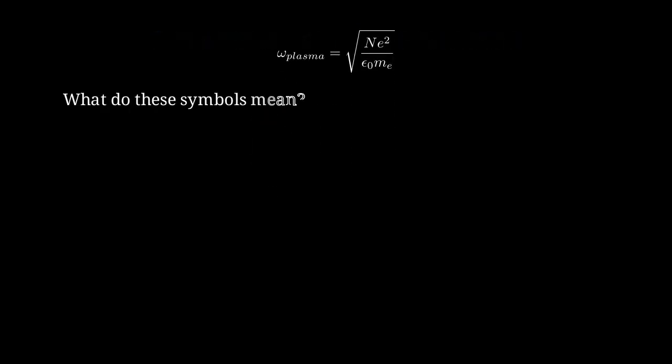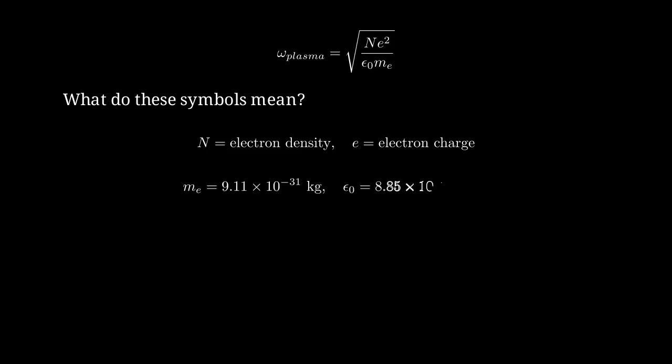Let's break down what each symbol in this equation represents. n is the electron density, which is about 10 to the 29 electrons per cubic meter for gold. e is the elementary charge, 1.6 times 10 to the minus 19 coulombs. mE is the electron mass, 9.11 times 10 to the minus 31 kilograms. And epsilon naught is the permittivity of free space, 8.85 times 10 to the minus 12 farads per meter.